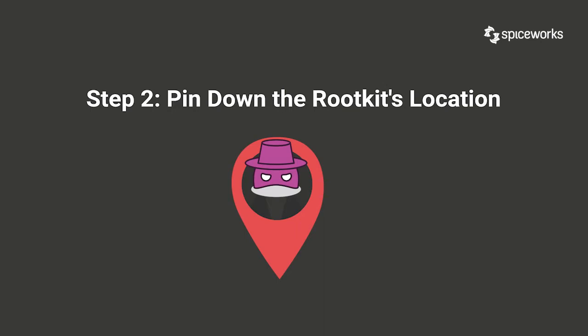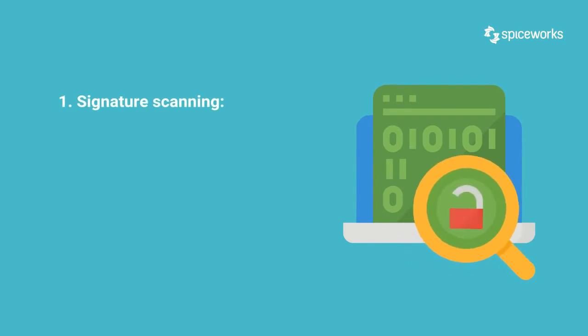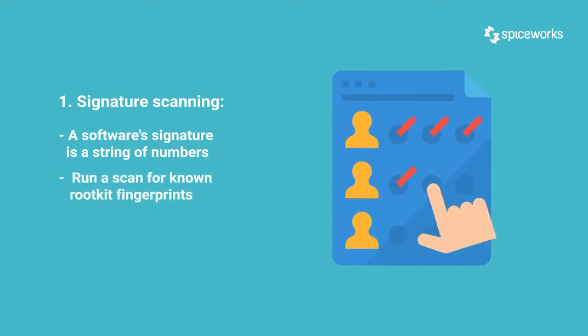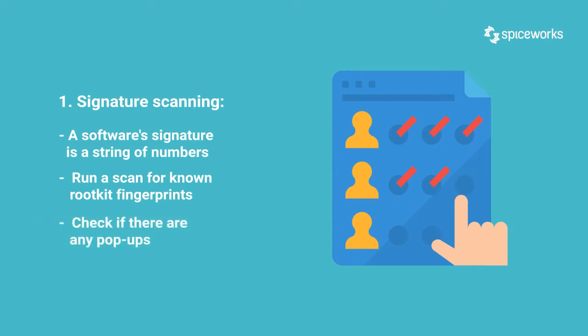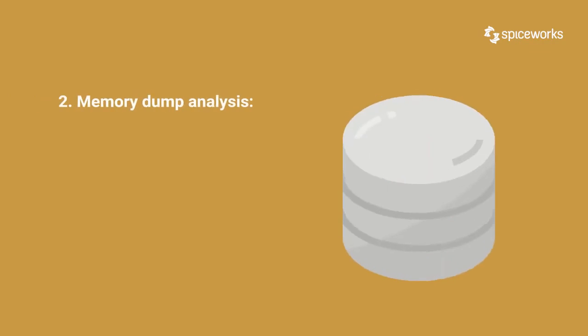Pin down the rootkit's location. If you think your machine has a rootkit installed, try the following methods to locate it. Number one: signature scanning. Computers work with numbers to do signature scanning. The signature of a piece of software is a string of numbers that serves as its computer-speak description. You can run a scan against the list of known rootkit fingerprints to check if there are any matches.